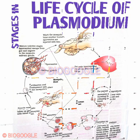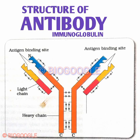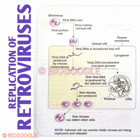Next is the life cycle of Plasmodium, the malarial parasite — show all stages for five marks. Next is the structure of an antibody molecule — the diagram may be asked for three marks, so all labelings are compulsory. Next is the replication of retroviruses — show how the virus enters the animal cell and how it releases the DNA and forms DNA by reverse transcription.